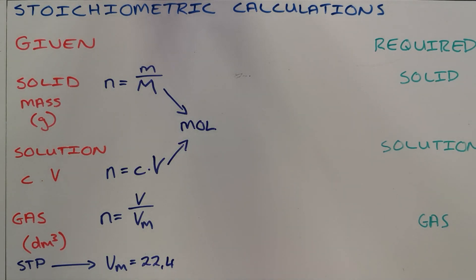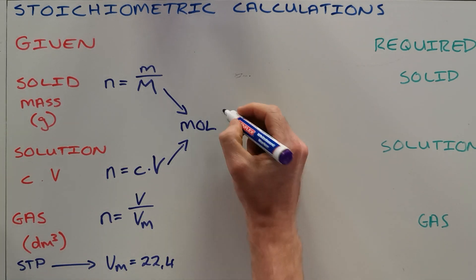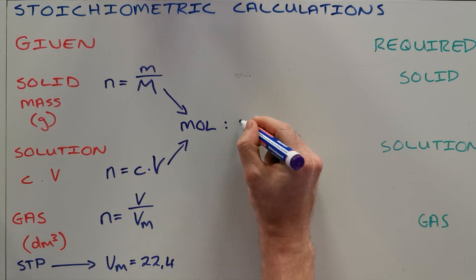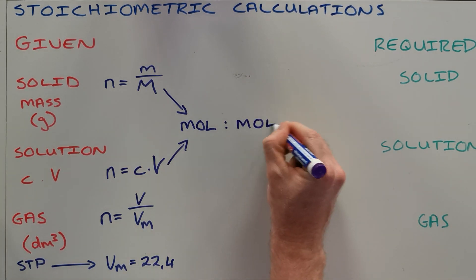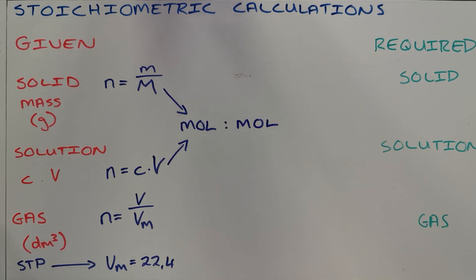Once you have converted what you have been given into a number of moles, you can then use that to find what's required of you in a number of moles. You do that using the ratio obtained from the coefficients of the balanced equation.